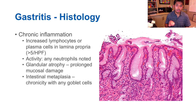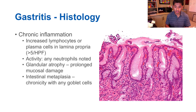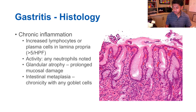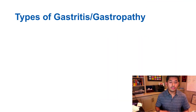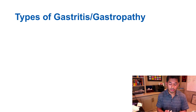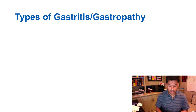Most importantly, in gastritis you will see chronic inflammation, including inflammatory cells such as plasma cells or lymphocytes. There are also different types of gastritis and gastropathy depending on how you want to characterize them.